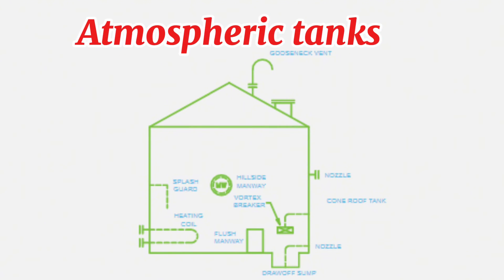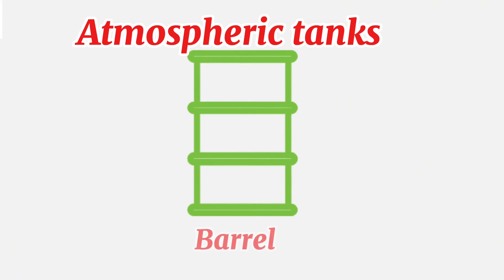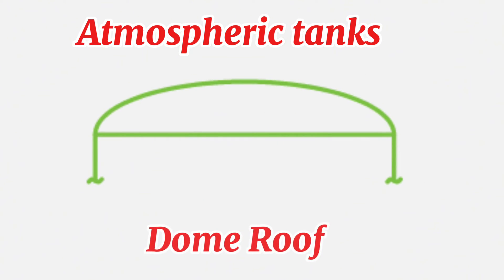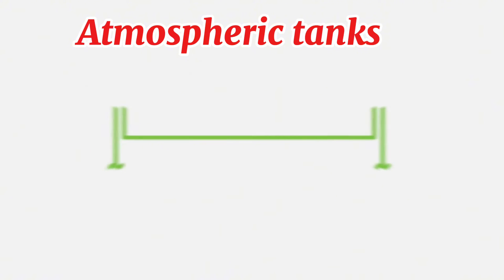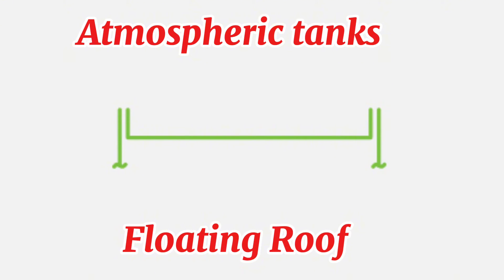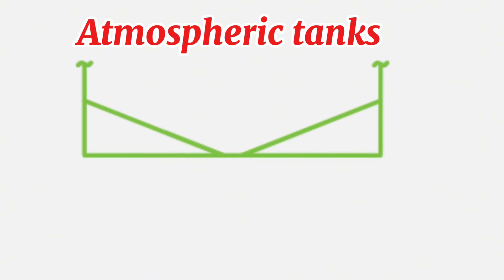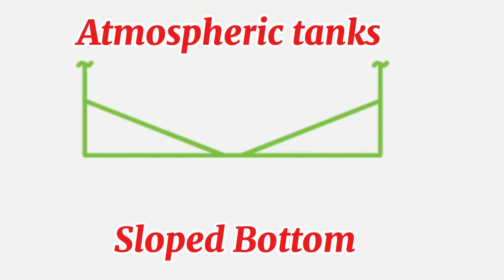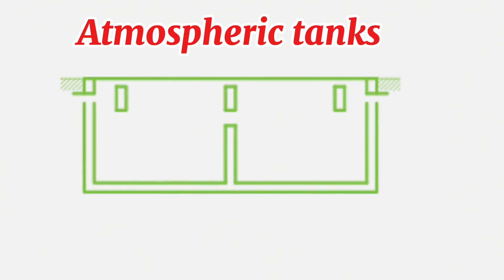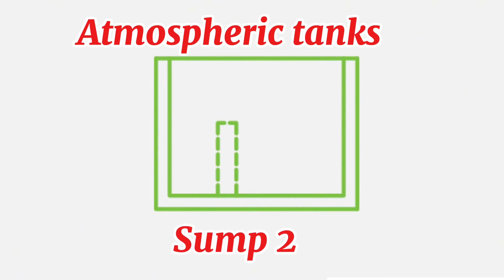Atmospheric Tanks are containers for holding a variety of liquids at atmospheric pressure. There are various types as follows: Barrel, Dome Roof, Floating Roof, Sloped Bottom, Sump 1, and Sump 2.